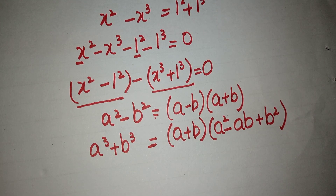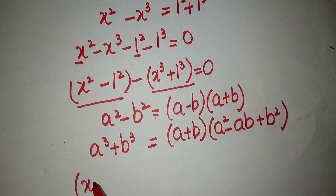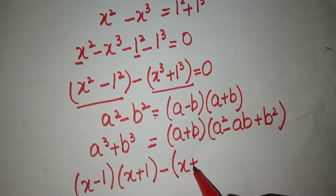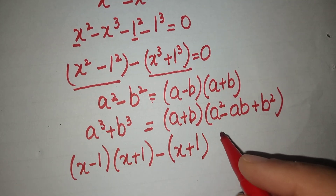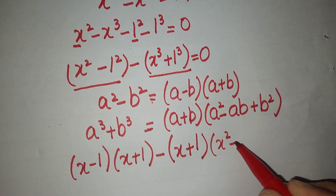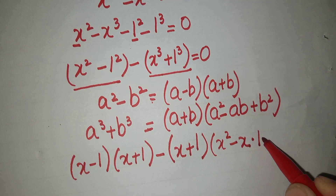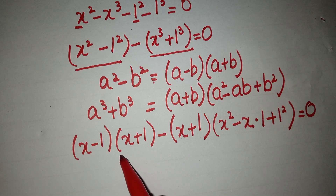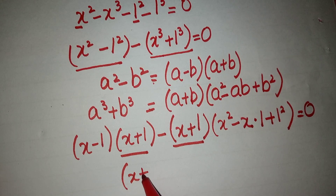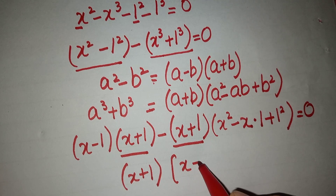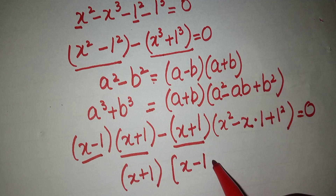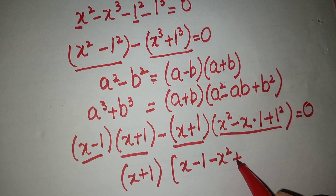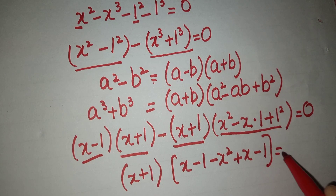Applying these formulas, we get (x minus 1)(x plus 1) minus (x plus 1)(x squared minus x plus 1) equals 0. We then factor out (x plus 1), giving x plus 1 bracket x minus 1 minus (x squared minus x plus 1) equals 0, which simplifies to (x plus 1)(minus x squared plus 2x minus 2) equals 0.